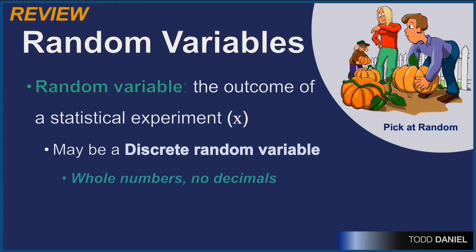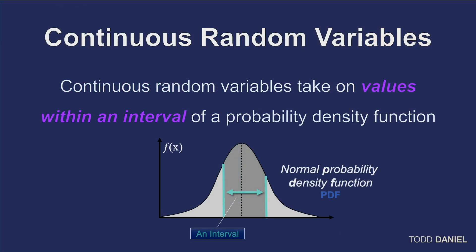However, this week we're going to learn about continuous random variables. Continuous random variables take on values within an interval of a probability density function. In this normal distribution we can see a lower value and an upper value, with the arrow indicating the values within that interval.